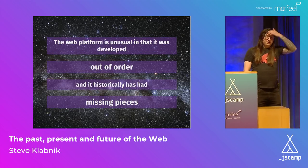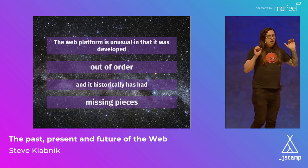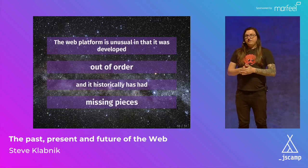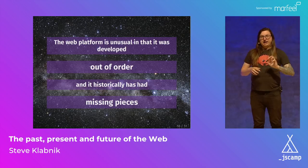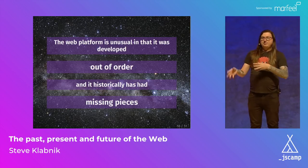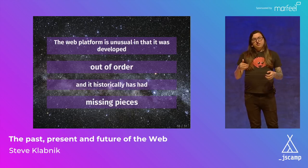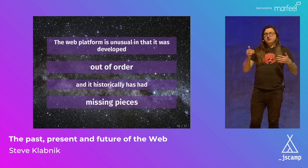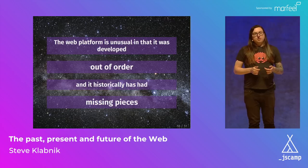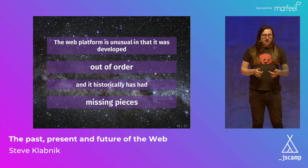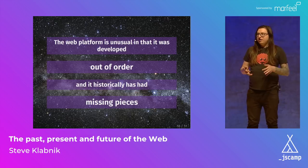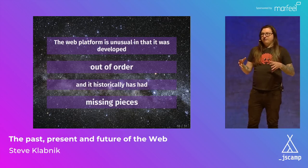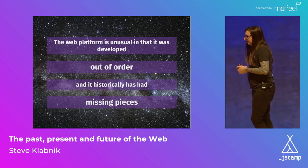So what happens when we think about the web in these terms? Most of the time, I put the three components in order one, two, three because usually platforms are developed in that order — first the instruction set, then the runtime, then the tools. But the web platform is really weird. It was not developed in that order, which is how almost every other platform has been developed. It's also historically been missing chunks of this ontology of platforms.